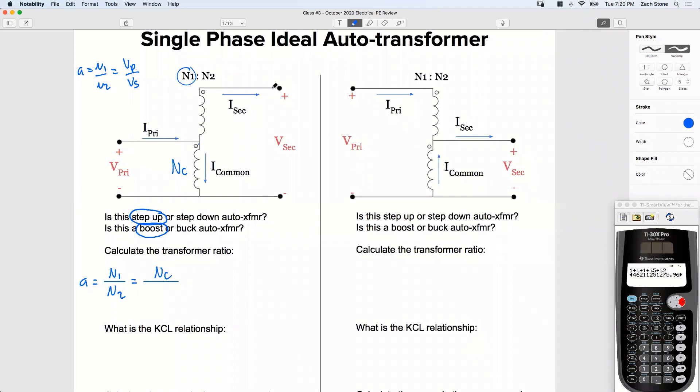All right, on my secondary side, from V secondary plus all the way to V minus. Let's call this N lowercase, we'll call it Se series. So yeah, Se is good, not just Ns. We don't want to make you think it's secondary. Okay, so on the secondary side, I've got Nse, our series number of turns, plus our common number of turns. So this is also going to be equal to Nse plus Nc.